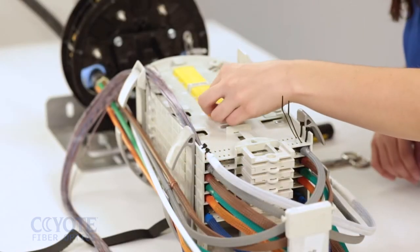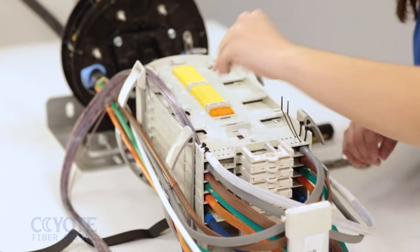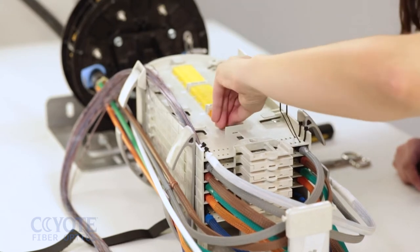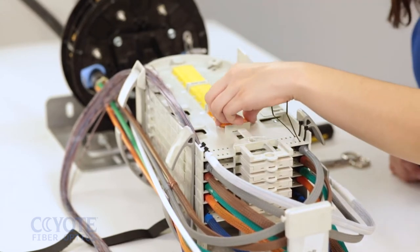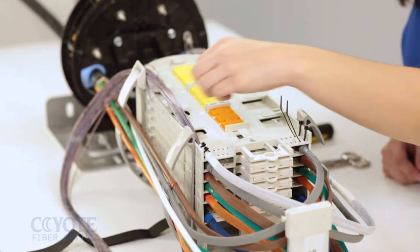To splice single and mass fusion in the same tray, the thin profile non-position tray must be used. To install the single fusion splice blocks in this tray, insert the two small legs into the guide rib at the top. Press on the bottom of the splice block to fully seat it.